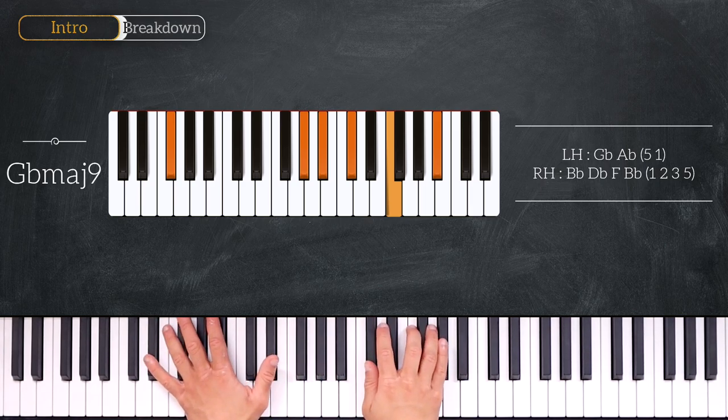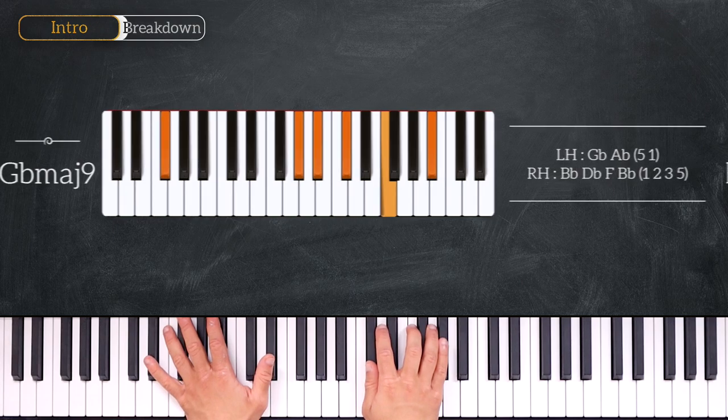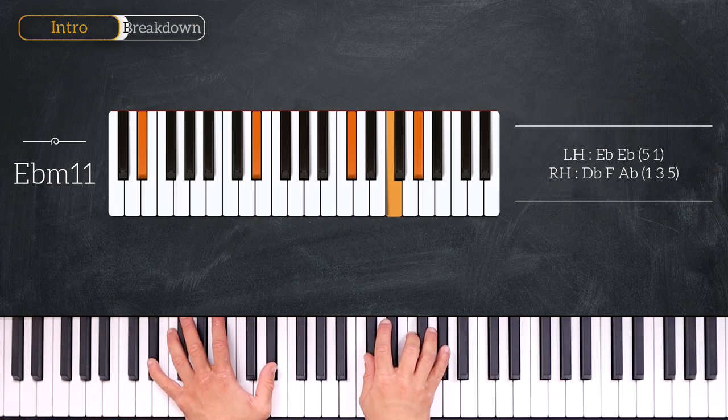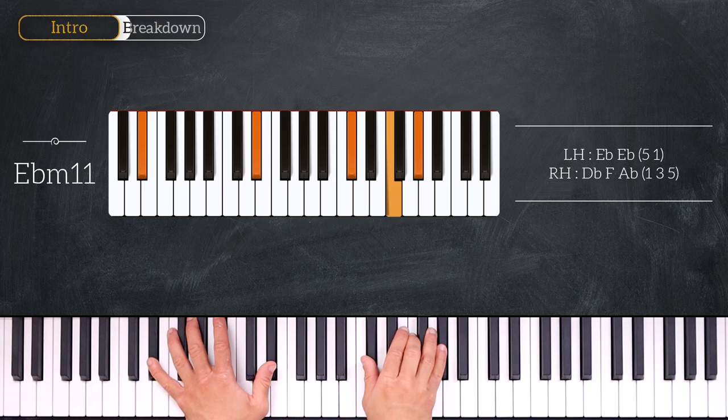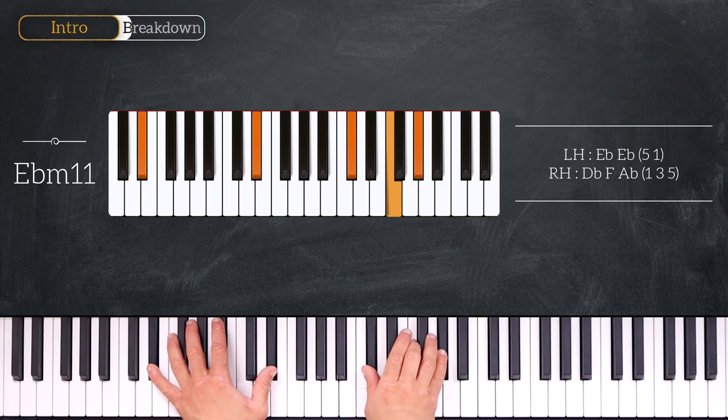The last chord of this progression will be this Eb minor 11. So we have octave Eb on the left hand and Db, F and Ab on the right hand. You can also view this as a Db major over an Eb bass.